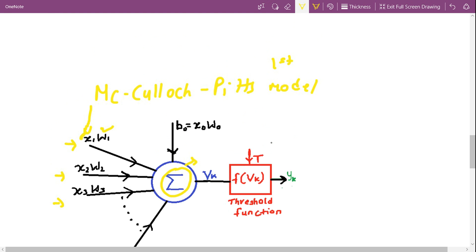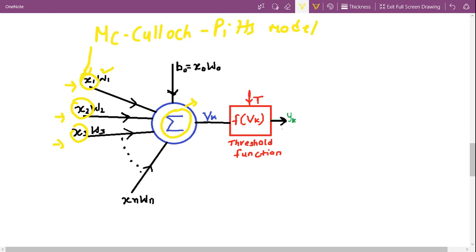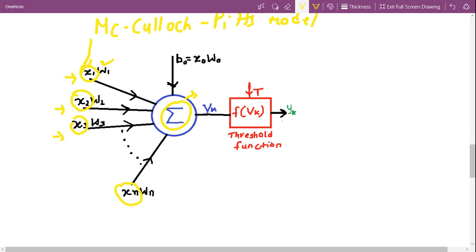These are the inputs x1, x2, x3, xn, these are the inputs and these are the weights. This is called bias, this term.